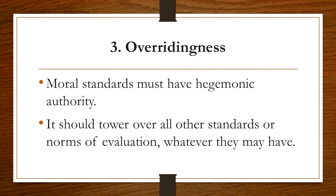It should be for the goodness and rightness of all. Number three is overridingness. Moral standards must have hegemonic authority, meaning they should tower over all other standards or norms of evaluation. They are not the only standards by which human actions can be judged, but they should take precedence over others. They have to be of prime and ultimate importance.